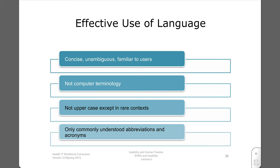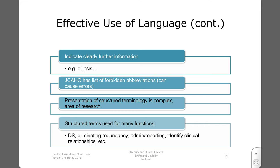Effective use of language means using language that is precise but familiar to users, and does not use computing terms to users unfamiliar with them. Uppercase should not be used except in rare contexts. Abbreviations should be handled cautiously. The Joint Commission of the Accreditation of Hospital Organizations (JCAHO) has forbidden use of certain abbreviations which can cause errors. It is also important to indicate when not all the information is visible on screen, such as by using ellipses, more links, and so on.